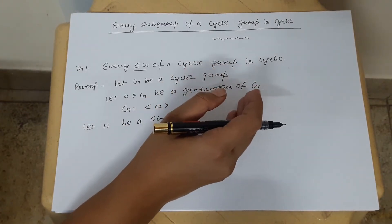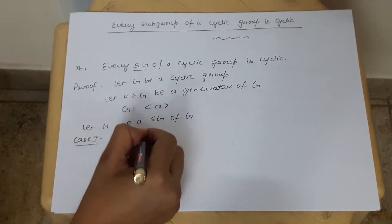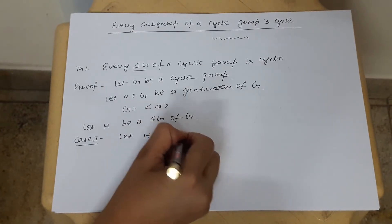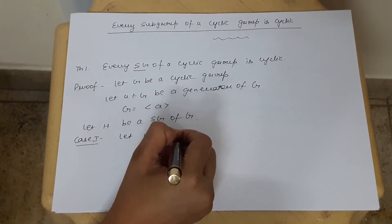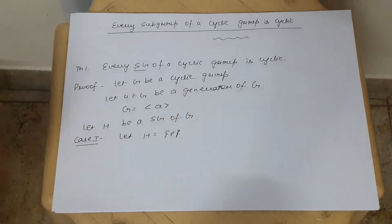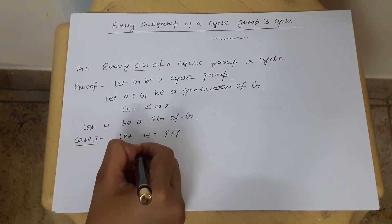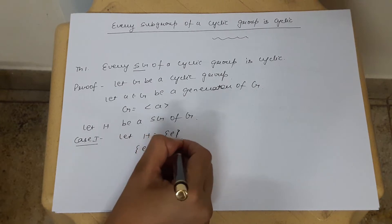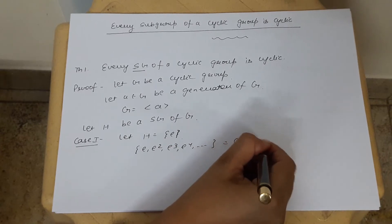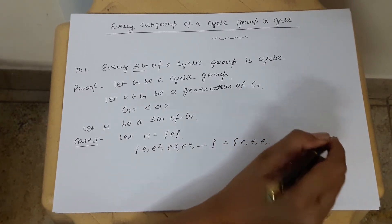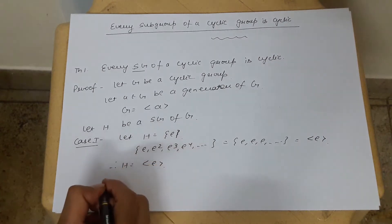We will prove this by taking two cases. Case 1: suppose H equals {e}, meaning H contains only the singleton identity element. Then we can write this as e, e², e³, e⁴, and so on — which is nothing but e, e, e, e. This is the cyclic group generated by e. Therefore H equals the cyclic group generated by e, and so H is cyclic.